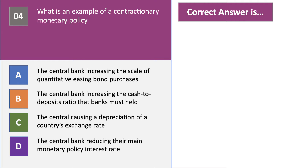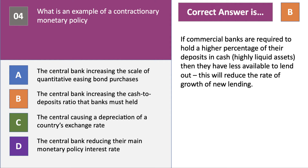Question four: what is an example of a contractionary monetary policy? The right answer is B. A central bank increasing the scale of bond purchases — QE — is expansionary monetary policy. A depreciation of the exchange rate adds to aggregate demand, and a cut in interest rates is also expansionary. Option B: if commercial banks are required to hold a bigger percentage of their assets in cash, they have less available to lend out, which in theory reduces the rate of growth of new lending to businesses and consumers.